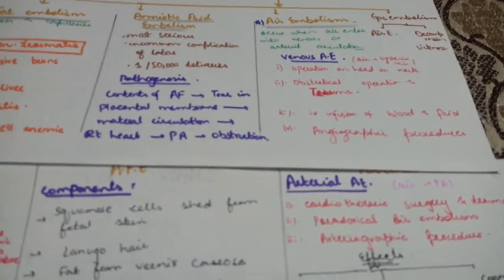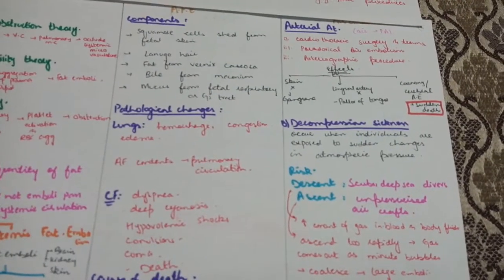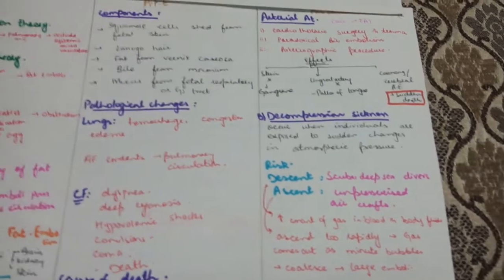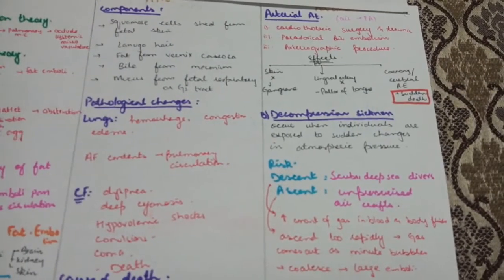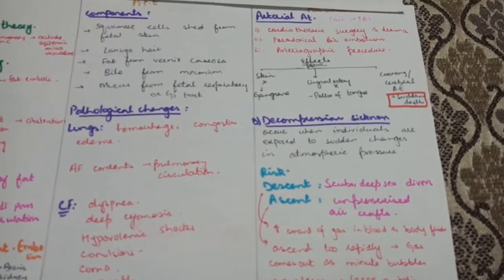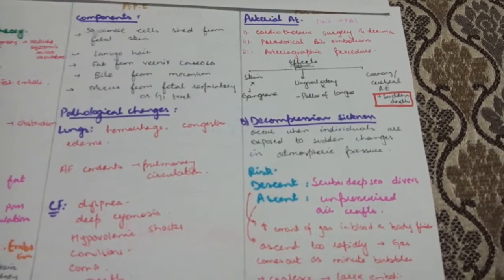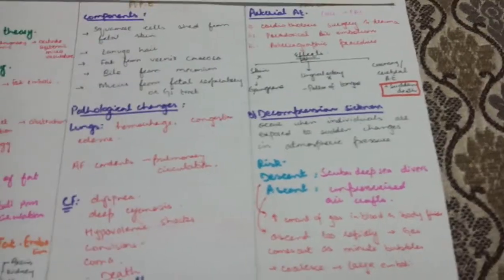Arterial air embolism involves entry of air into pulmonary vein, for example during cardiothoracic surgery, paradoxical air embolism, or arteriographic procedure. If it affects skin it causes gangrene. If lingual artery is occluded it causes pallor. If cerebral or coronary artery is occluded it causes sudden death.